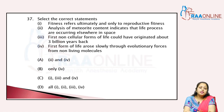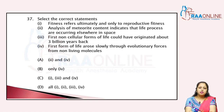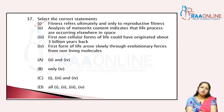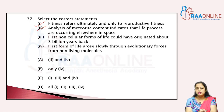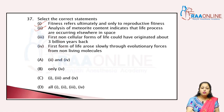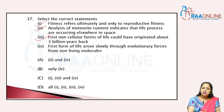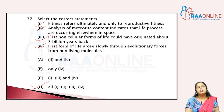Select the correct statement: fitness refers ultimately and only to reproductive fitness — correct, according to Darwinian theory. Analysis of meteorite contents indicates life processes are occurring elsewhere in space — correct. Non-cellular form of life could have originated about three million years back — correct. First form of life arose slowly through evolutionary forces from non-living molecules — correct. All statements are correct, so the answer is D.